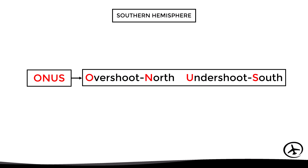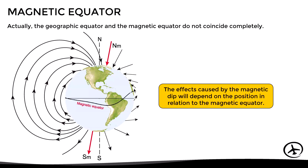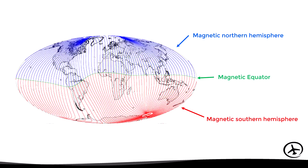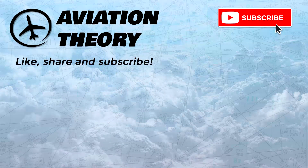This can be remembered with the acronym ONUS: Overshoot North, Undershoot South, for the southern hemisphere. It should be clarified that these northern and southern hemispheres are defined in relation to the magnetic equator, not the geographic equator. Therefore, the effects of magnetic dip depend on the aircraft's position relative to the magnetic equator. The magnetic hemispheres can be visualized on a map where the blue area represents the magnetic northern hemisphere and the red area the magnetic southern hemisphere.